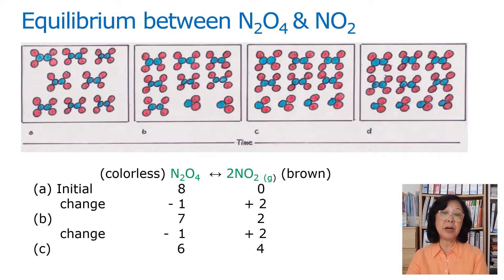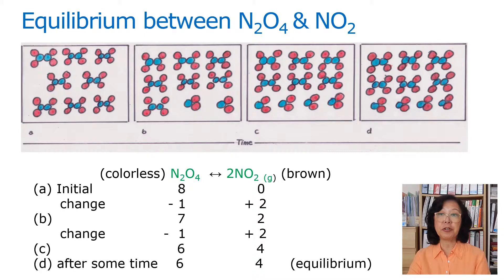This will go on for some time until we constantly get the same distribution. This is depicted in diagram D. When the concentration doesn't change anymore, we know that equilibrium is reached.